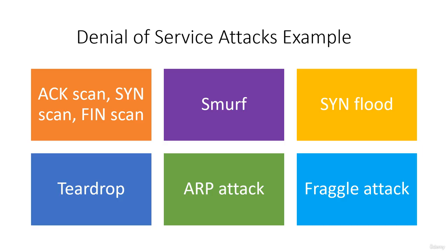Also known as ARP spoofing or an ARP attack, this technique involves sending ARP messages over a network to link the attacker's MAC address to the IP address of the target. When executed successfully, traffic intended for the target is instead received by the attacker, leading to a denial of service. These types of attacks can only be performed on a local area network that uses ARP.